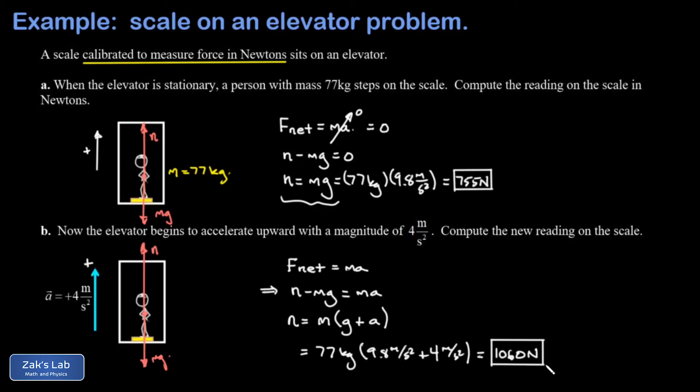And this is why if you get on a particularly aggressive elevator, your knees can almost buckle when it first starts accelerating upward. For that moment you can have a significant increase in your apparent weight.